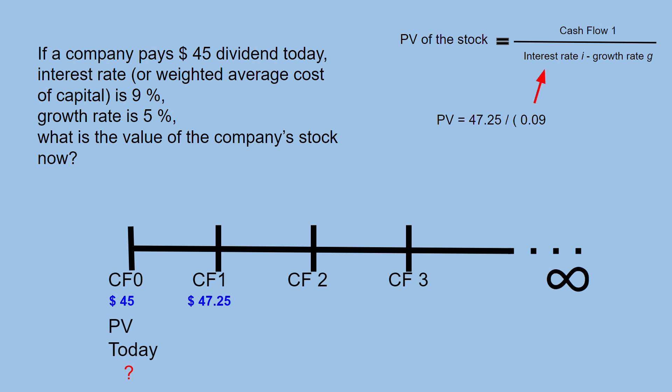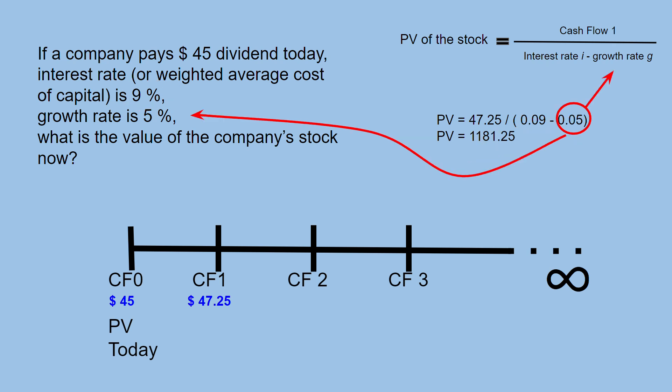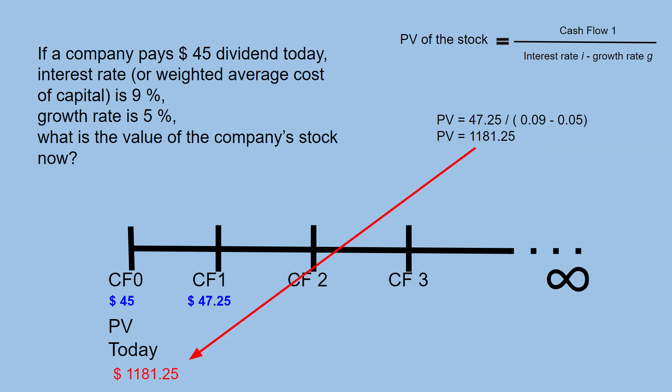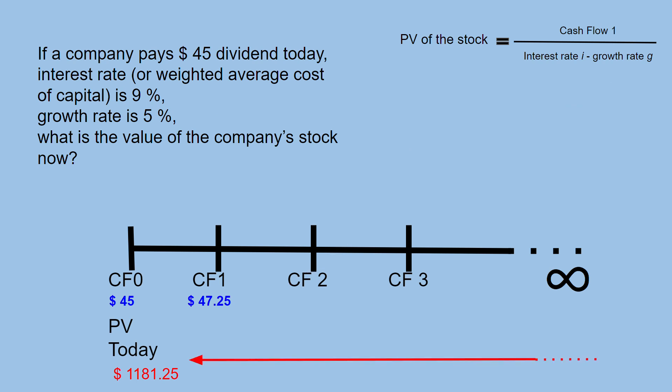Present value equals cash flow 1 divided by 9% — which is the interest rate — minus 5%, which is the growth rate. And we get the present value today.